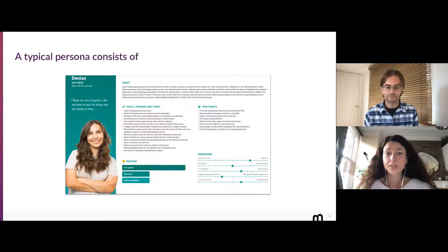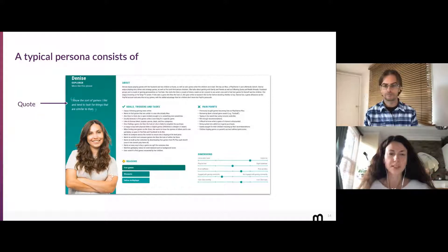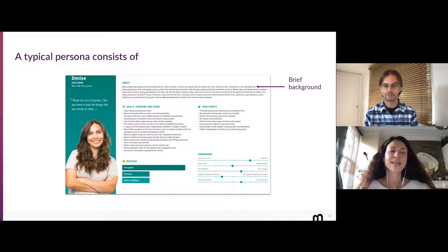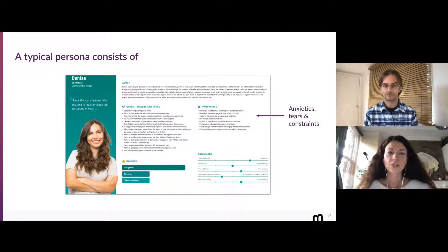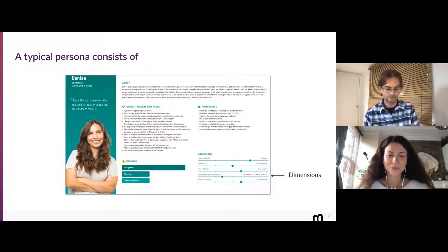A typical persona consists of: a name (sometimes distinct, sometimes creative), a snappy quote summarizing what the persona is about, a photo or visual element, a brief background or biography, anxieties, fears, constraints and pain points, goals, triggers and tasks, and usually dimensions — which we'll explain later. These components work together to make the persona concise, memorable and actionable.